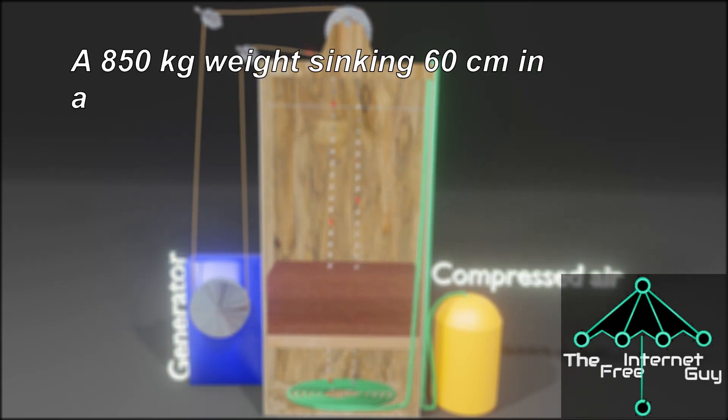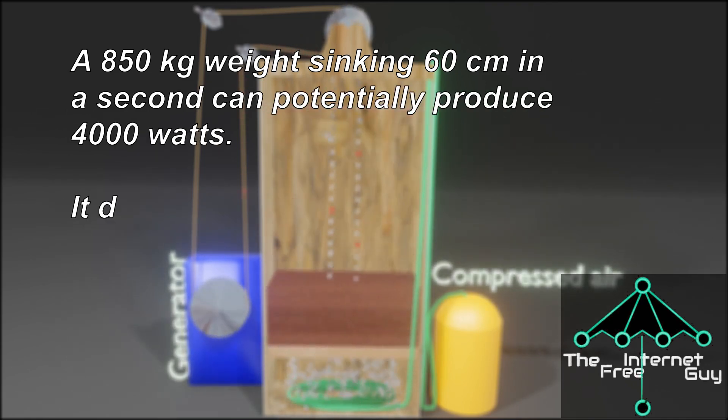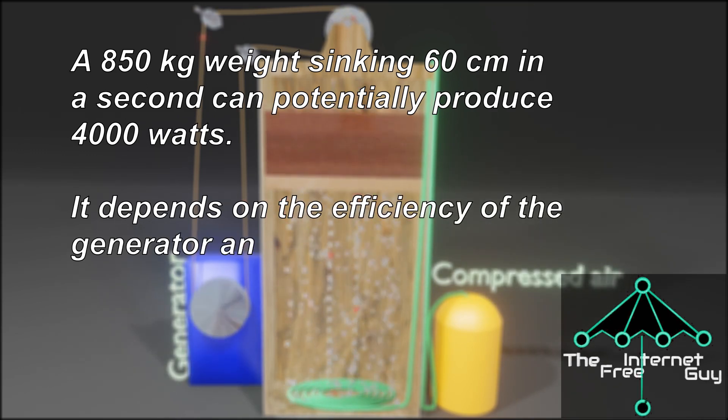An 850 kilogram weight sinking 60 centimeters in a second can potentially produce 4000 watts. It depends on the efficiency of the generator and how low the density of the water can get.